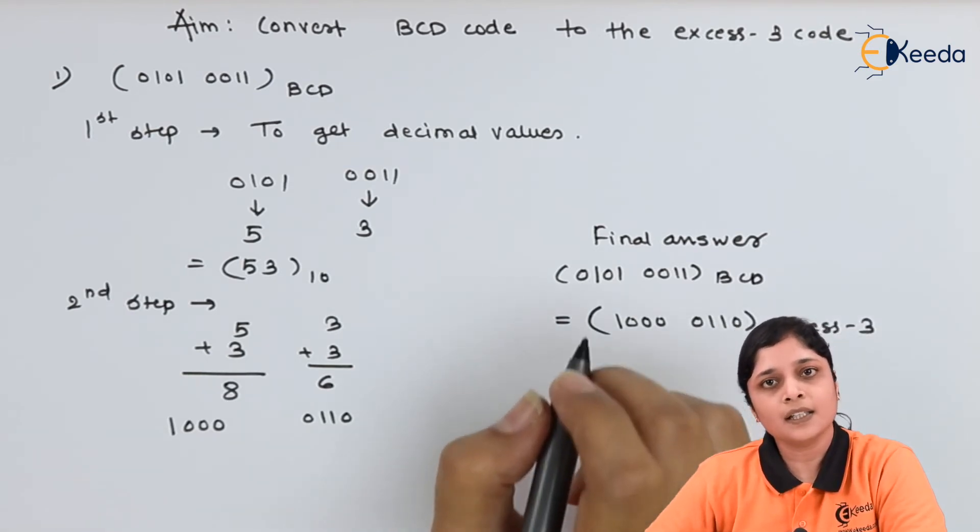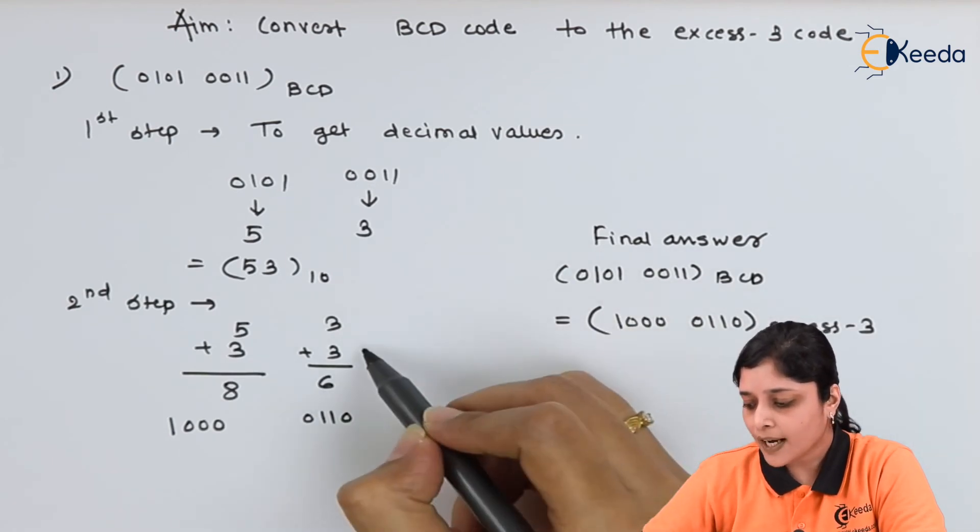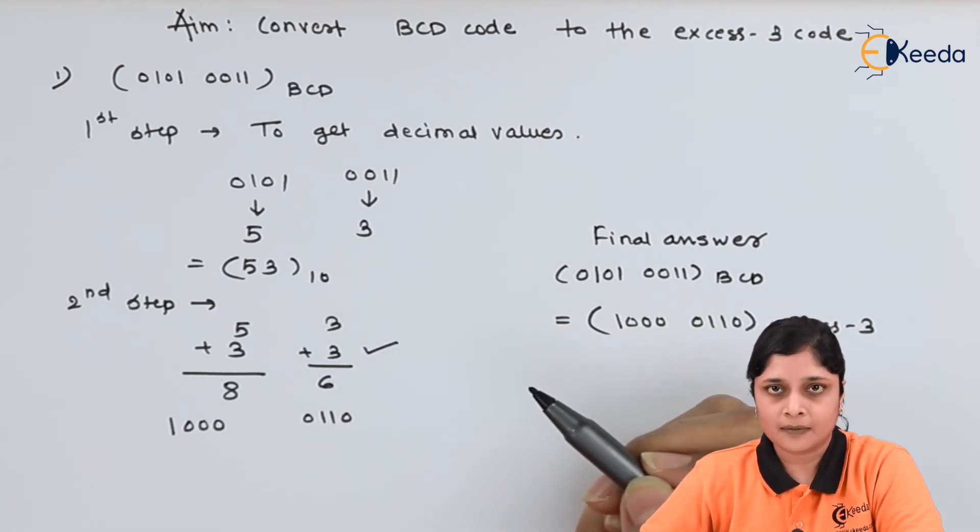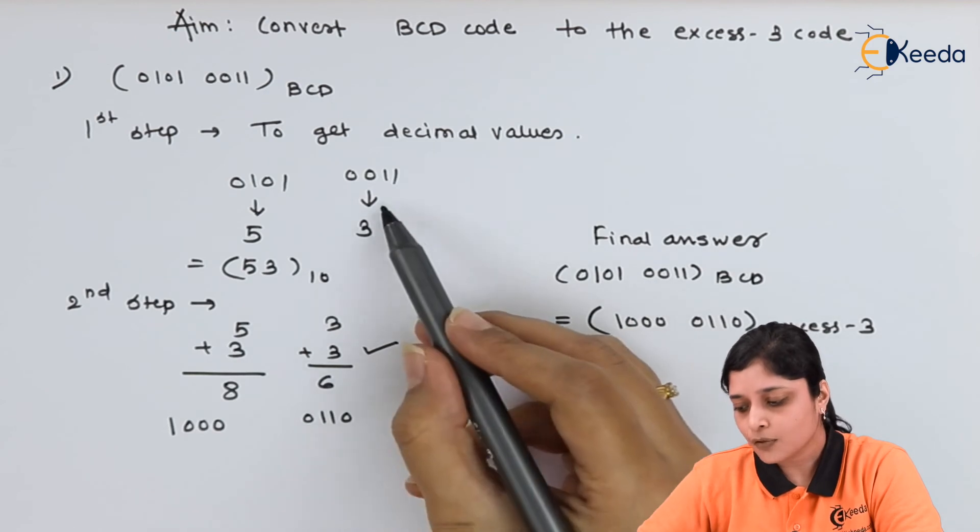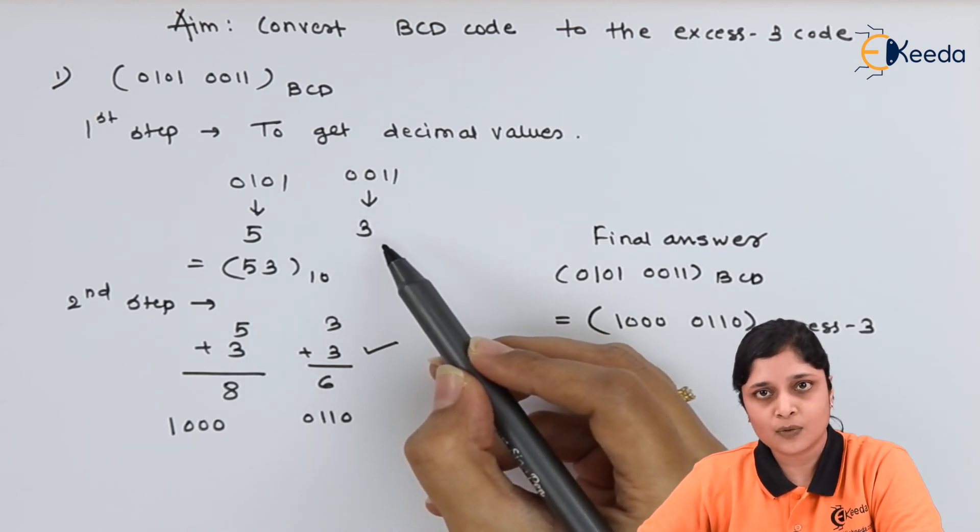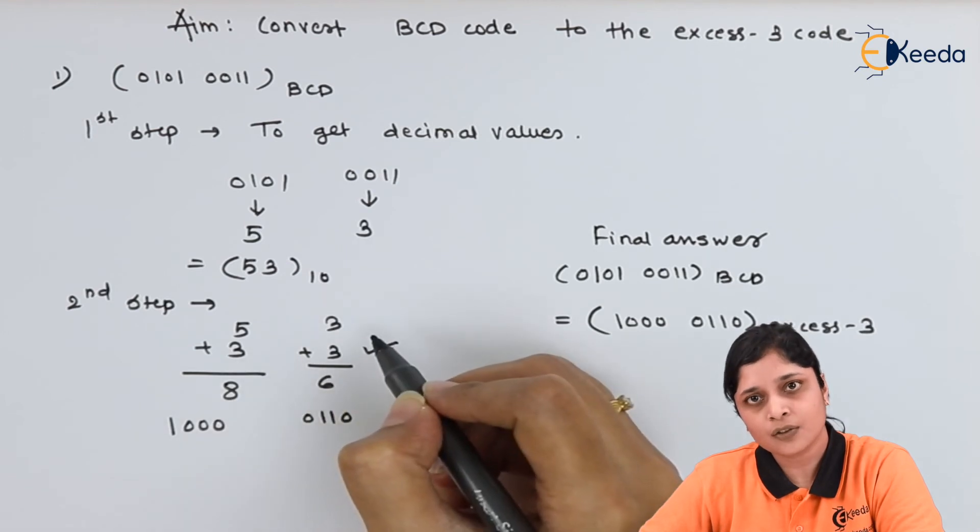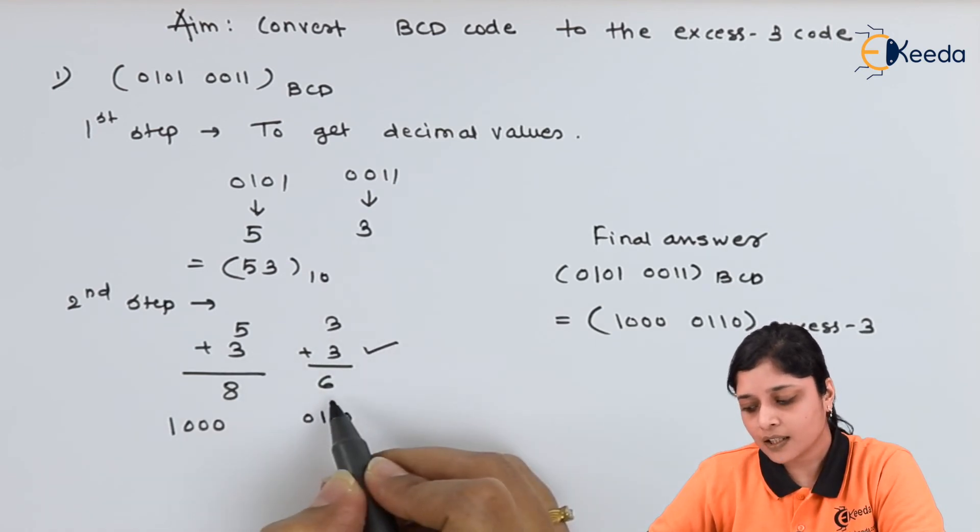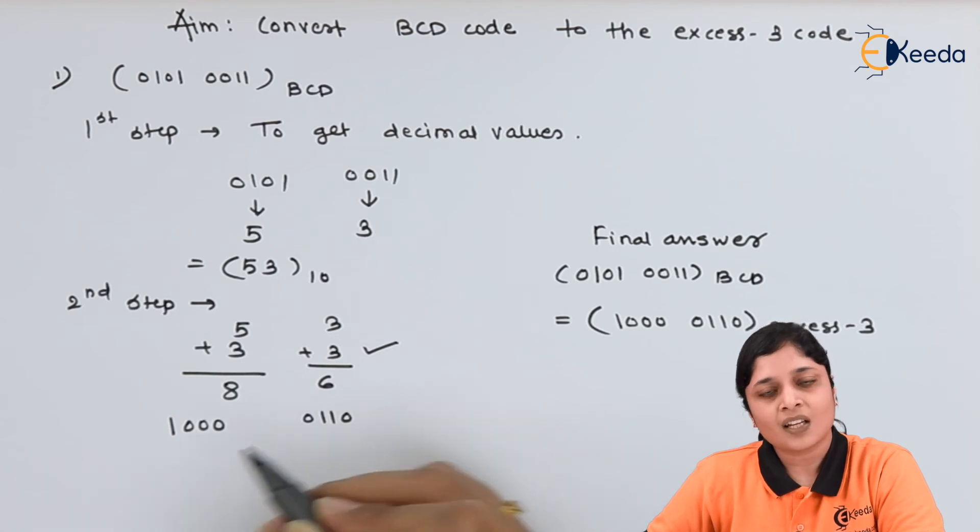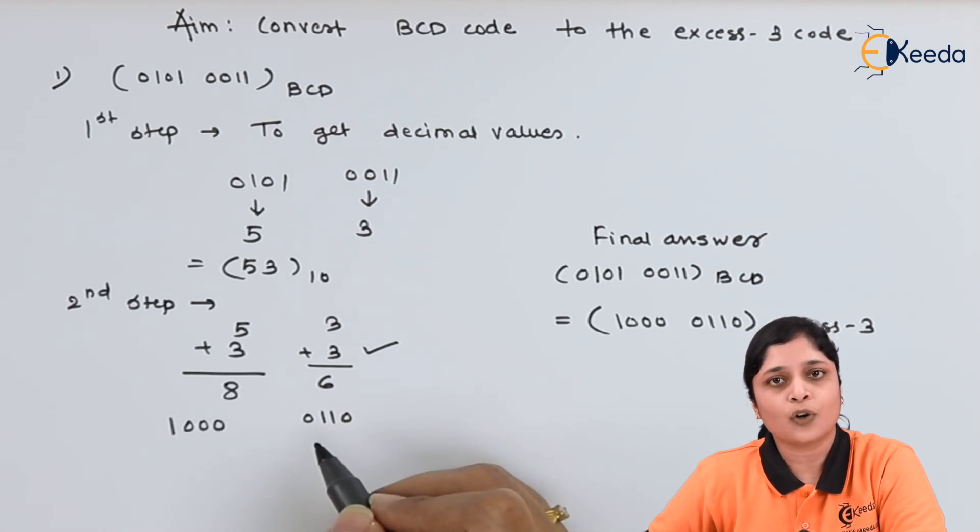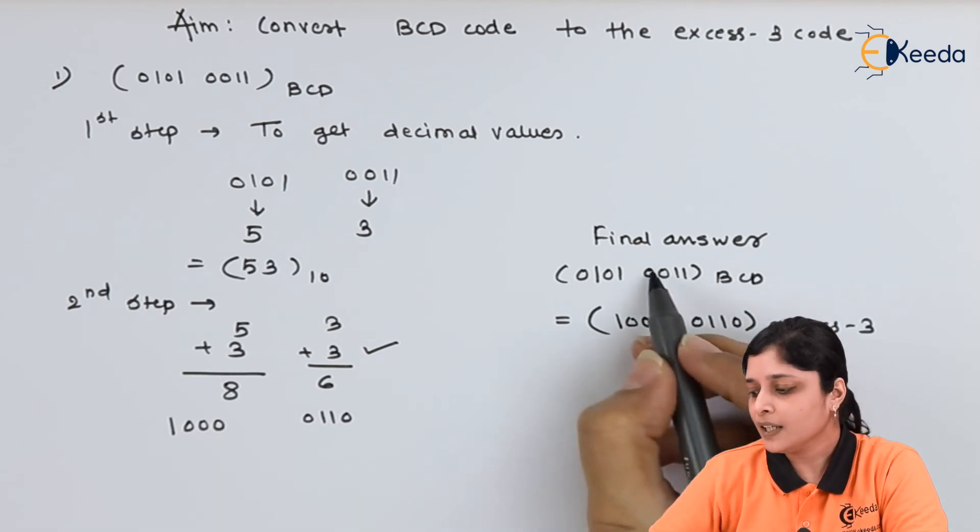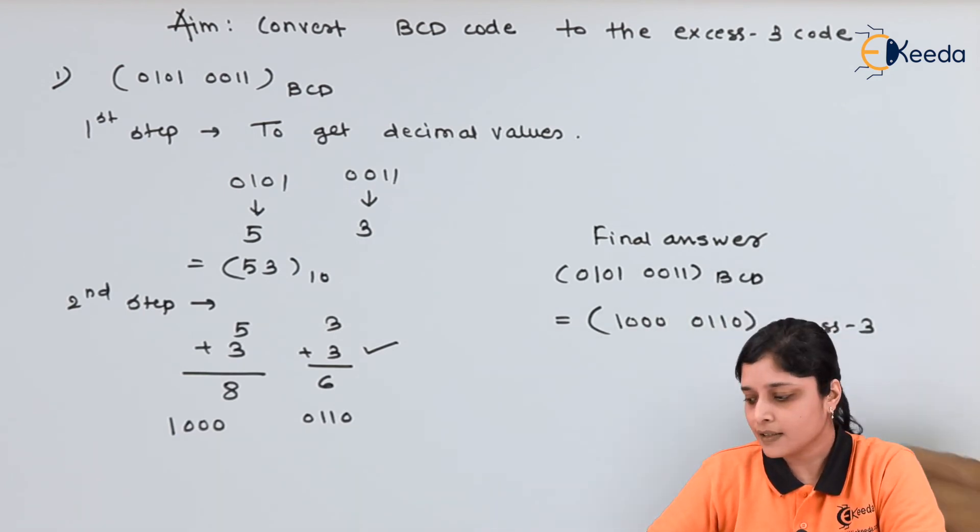Now the important part in this example is to add plus 3 separately. How? First of all get its decimal values and add 3 to 5 separately and add 3 to 3 separately. You will get your again 8 and 6 separately. Again write down its XS3 code according to the formula. And finally you get your final answer as 1000, 0110.